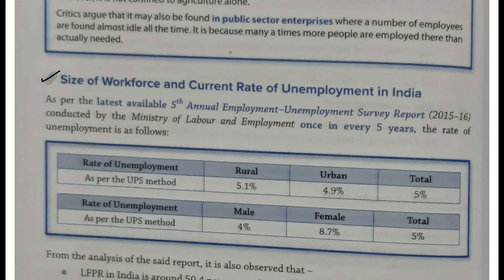Iska ek dikkat yeh hai ki har 5 saal mein ek baar conduct hota hai. Toh aap yeh bhi samajh sakte ho ki bahut comprehensive way mein cover hota hoga. Agar census har 10 saal mein ek baar conduct hota hai toh woh bahut comprehensive hota hai. Agar rozgaari aur berozgaari ke upar koi survey report bahut zyada comprehensive aati hai, toh woh har 5 saal mein yahi aati hai, aur yeh 5th thi, jo ki last time 2015-16 mein conduct hui.